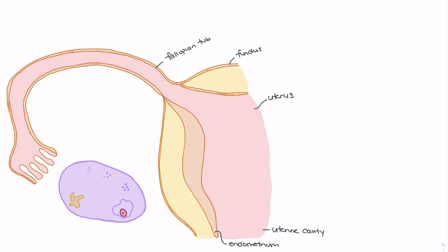In the fallopian tube, the isthmus is the inner one-third closest to the uterus. The fimbriae are the finger-like projections that come off the infundibulum, and these fimbriae are what help sweep the ovum into the fallopian tube. The infundibulum is the outer one-third of the fallopian tube, and this is where the egg enters the fallopian tube.